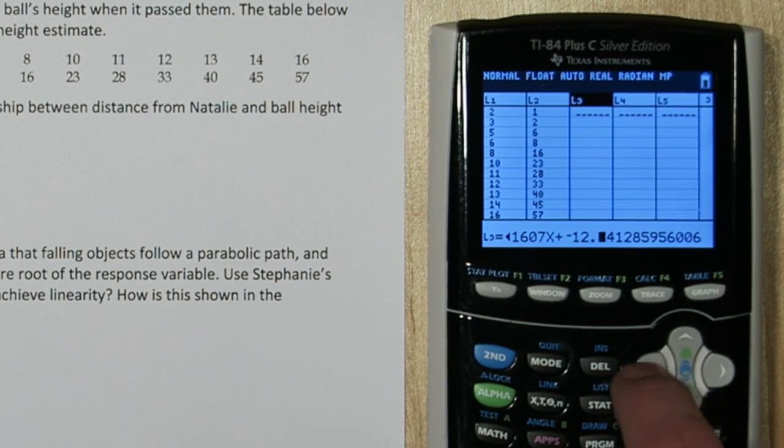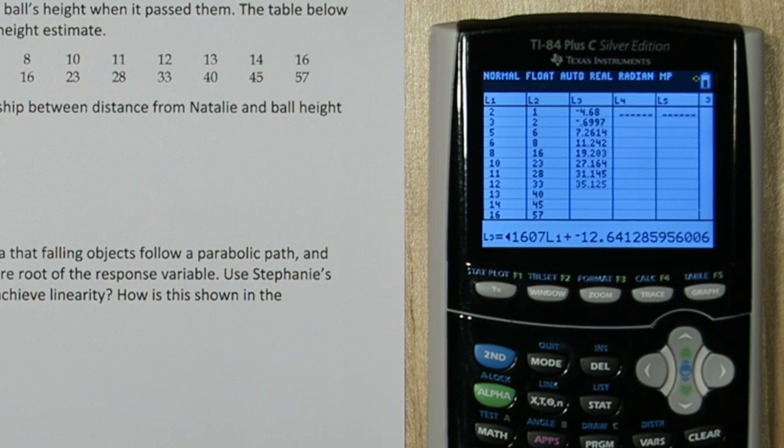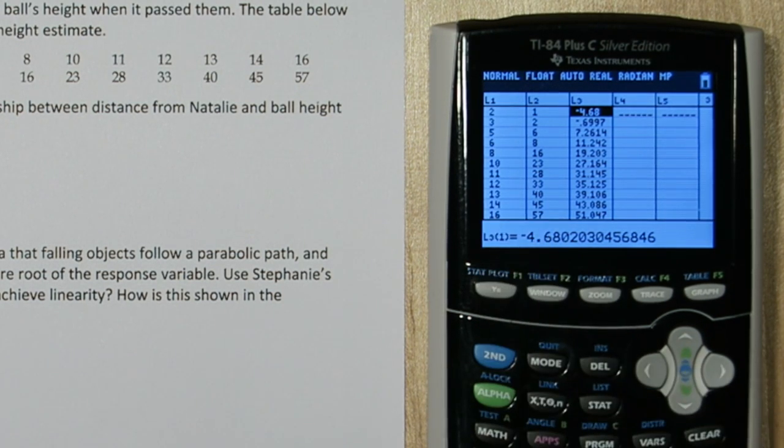I'm going to go over to x though, and I'm going to change this to list 1 by pressing 2nd and 1. Now when I press enter, these are all my expected heights of the ball for these distances.